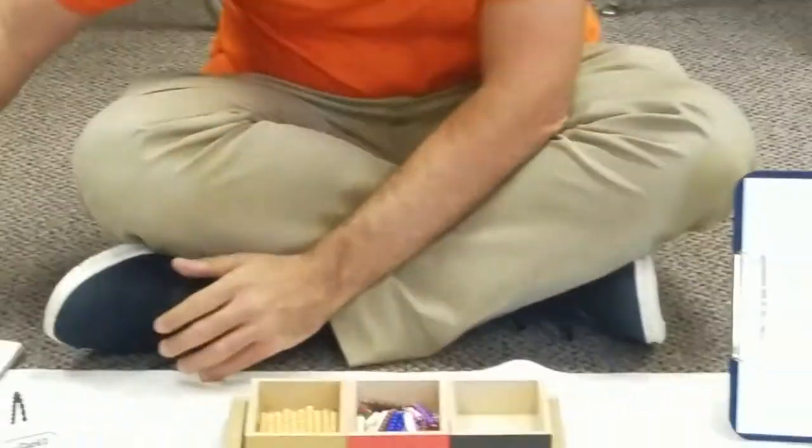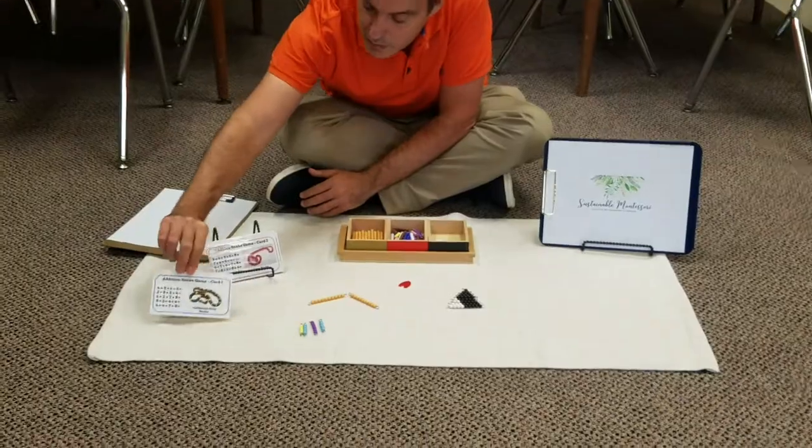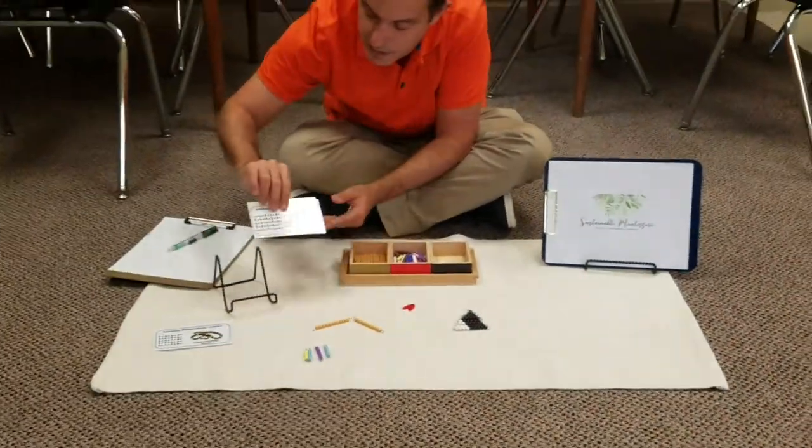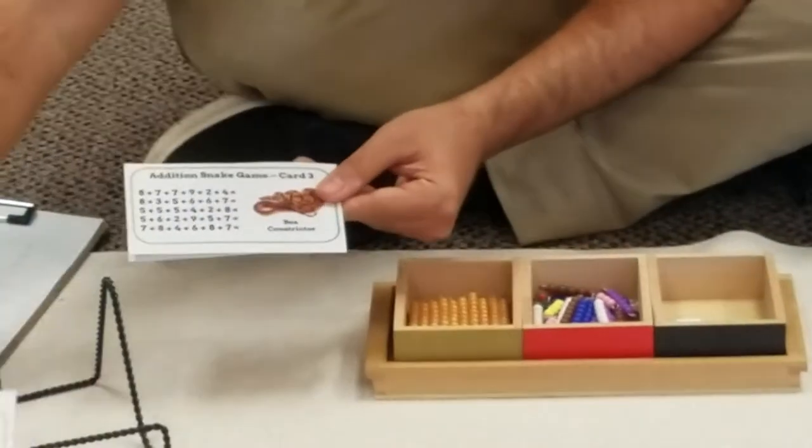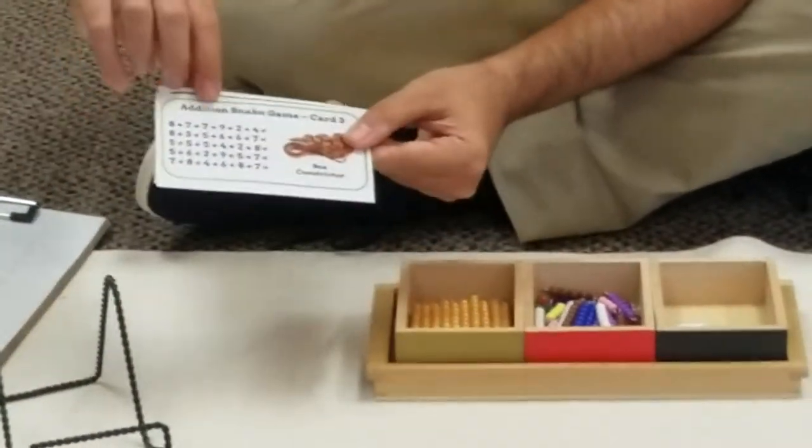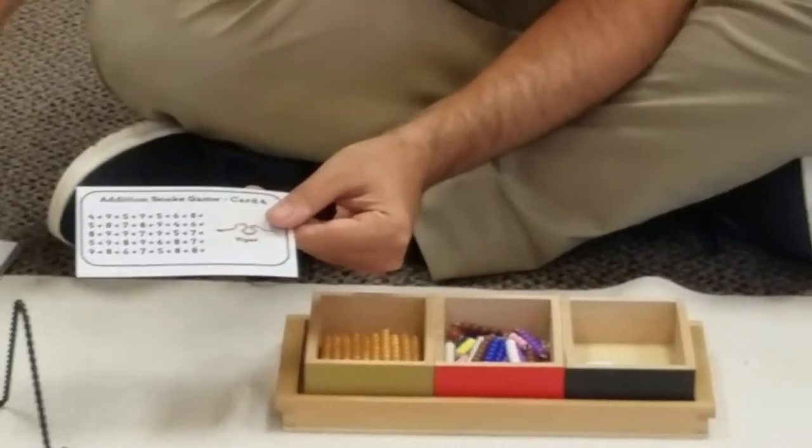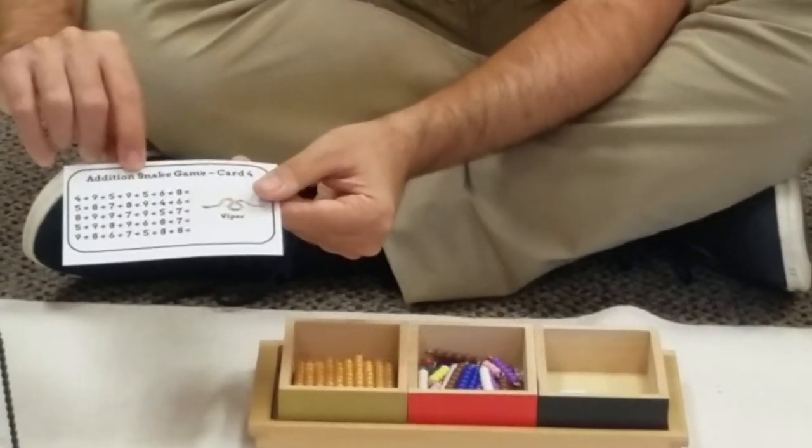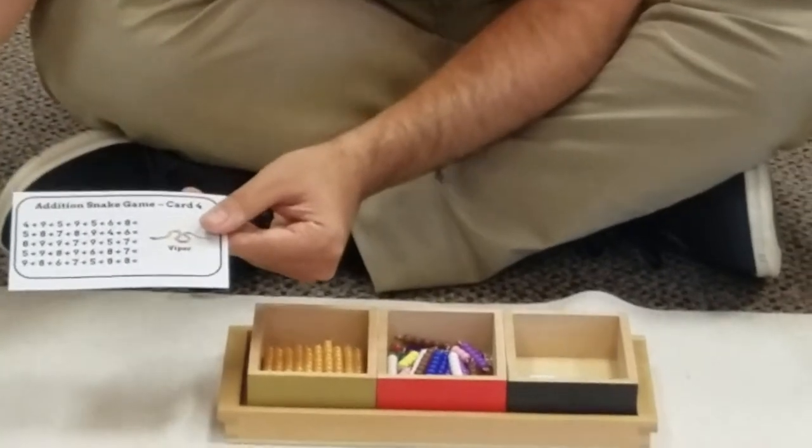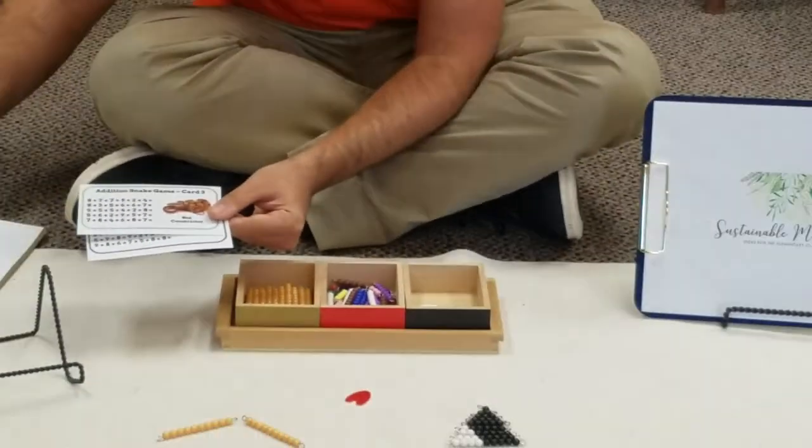In the different cards they get more complicated. The next snake has one more addend, that would be 5 addends. The next one will be 6 addends, and finally the last one will include 7 addends. So it's good for the students to get different practice. The first cards will give them a result that is in the tens.